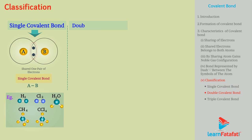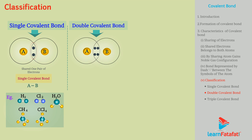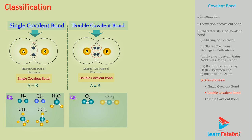Double covalent bond: the covalent bond formed by sharing of two electrons each, or two pairs of electrons, between atoms is called a double covalent bond. For example, the molecules O2, CO2, and C2H4 are formed by double covalent bond.